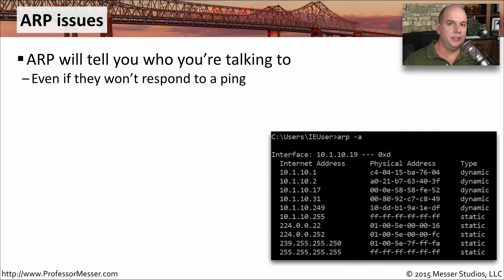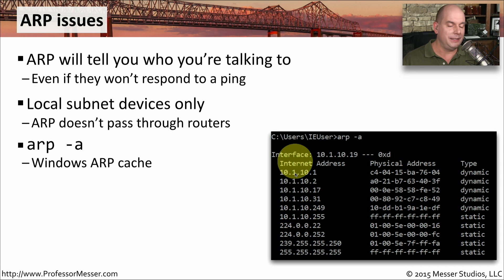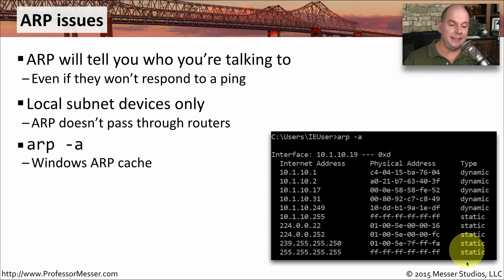Even if a device is not responding to a ping, you may still be communicating to that device — it just may be configured not to respond to your request. In that case, we can look at our ARP table and see if that device is communicating on the network. An ARP is not going to pass through routers, so you're only going to be able to perform ARP queries of devices on your local subnet. To look at the cache of what you have in your ARP table, you can run ARP -A. This will list out, just as we are doing in this diagram, a listing of IP addresses, the MAC addresses associated with those IP addresses, and whether they were defined statically on our individual device or identified dynamically across the network.